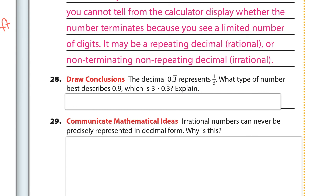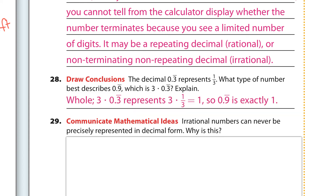Draw conclusions: the decimal 0.3 repeating represents 1/3, so what type of number is 0.9 repeating, which is 3 times that? It is one whole. Interesting.